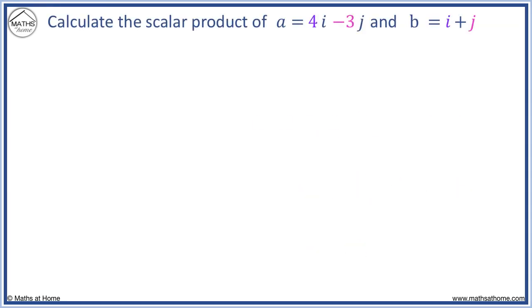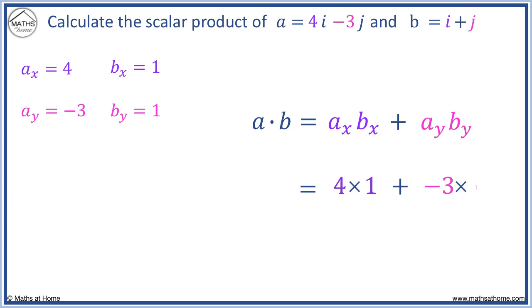Here is another example. AX equals 4, AY equals minus 3, BX equals 1, and BY equals 1. Notice that we must include negatives in each coefficient where necessary. And when we have I and J on their own, the coefficient is 1. The dot product becomes 4 times 1 plus minus 3 times 1, which equals 4 plus minus 3, which equals 1.